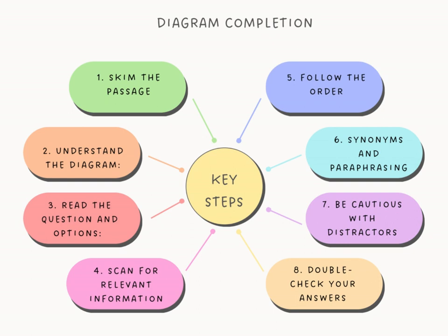Be conscious of distractors — that's number seven. The passage might contain information that is similar but not exactly what the diagram requires. Stay focused on finding the specific details that match the diagram labels and headings to avoid being misled by distractors. Finally, double-check your answers once you have completed the diagram — review your answers and ensure that they make logical sense and are consistent with the information provided in the passage.